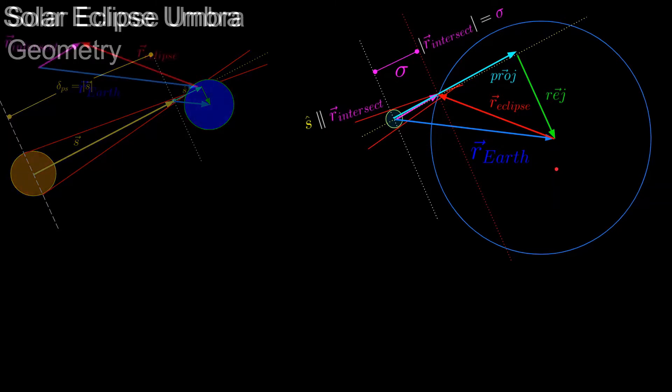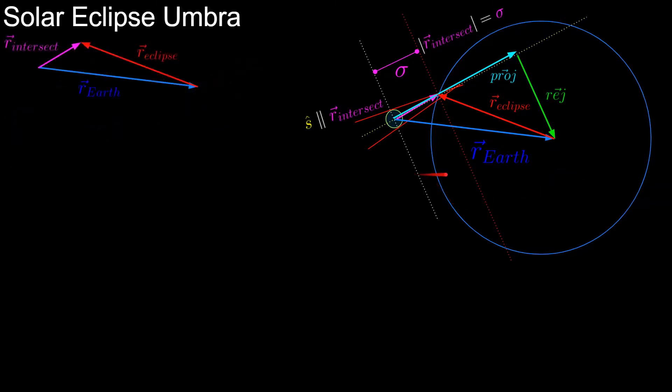And the first thing to notice here is that the vector pointing from the moon to the Earth, and these two new vectors form a closed triangle, so we can put the relationship in equation form by adding them tip to tail.